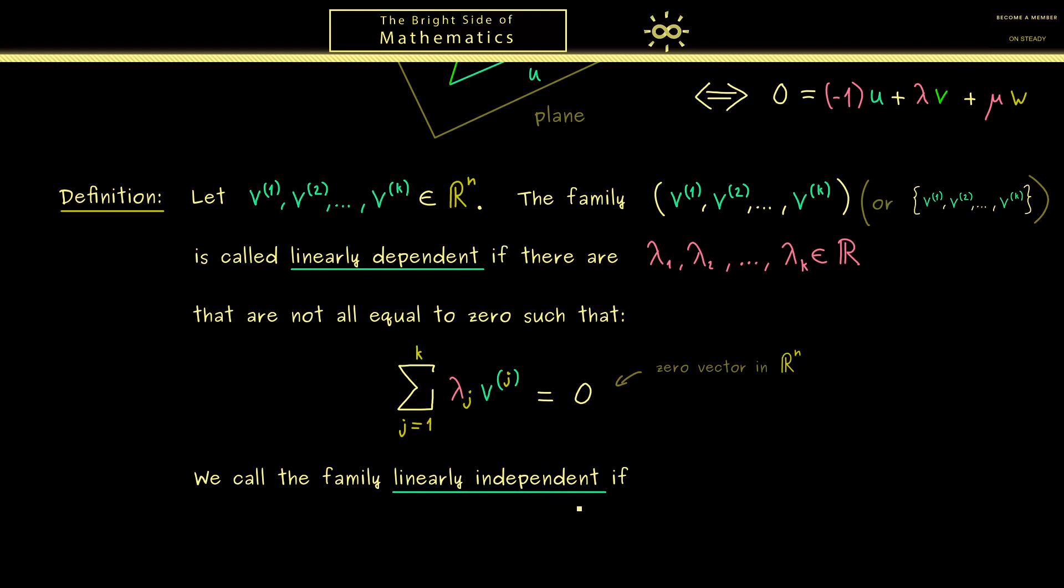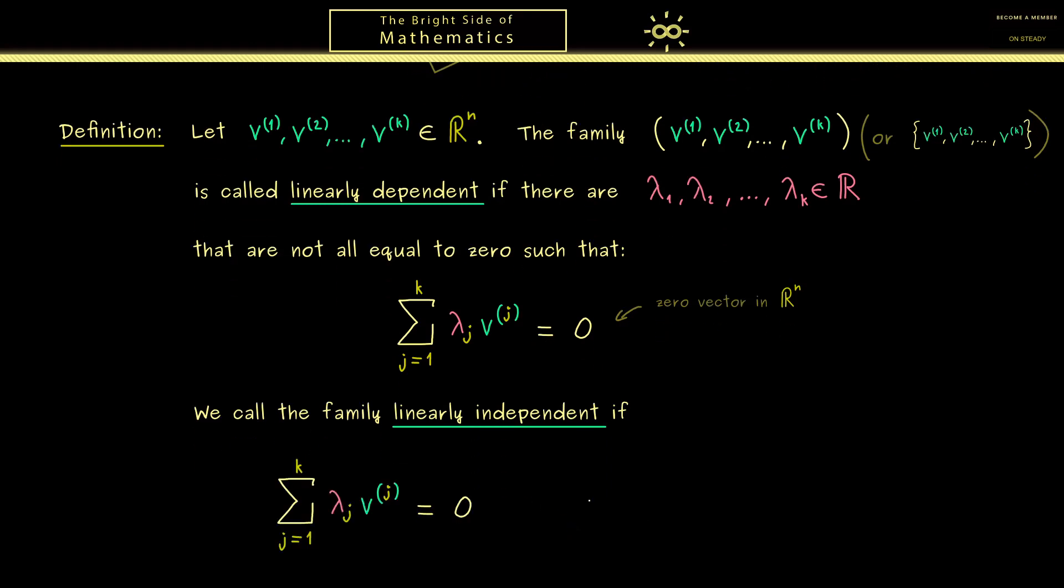And indeed, this will be the important notion for a lot of topics later. Therefore, it is useful instead of saying that the family is not linearly dependent to put this into a separate formula. So we simply take an arbitrary linear combination for the zero vector consisting of our k vectors v¹, v², and so on. And then we conclude that the only possibility is that all the scalars are zero.